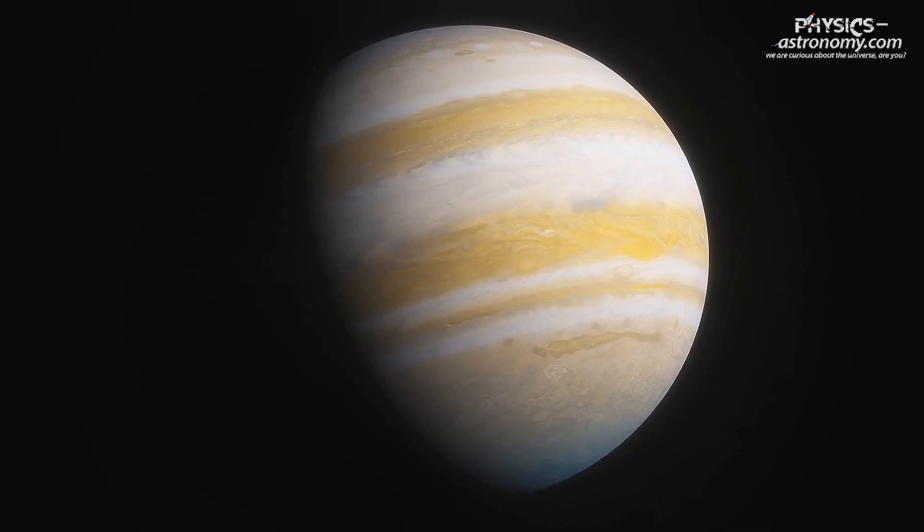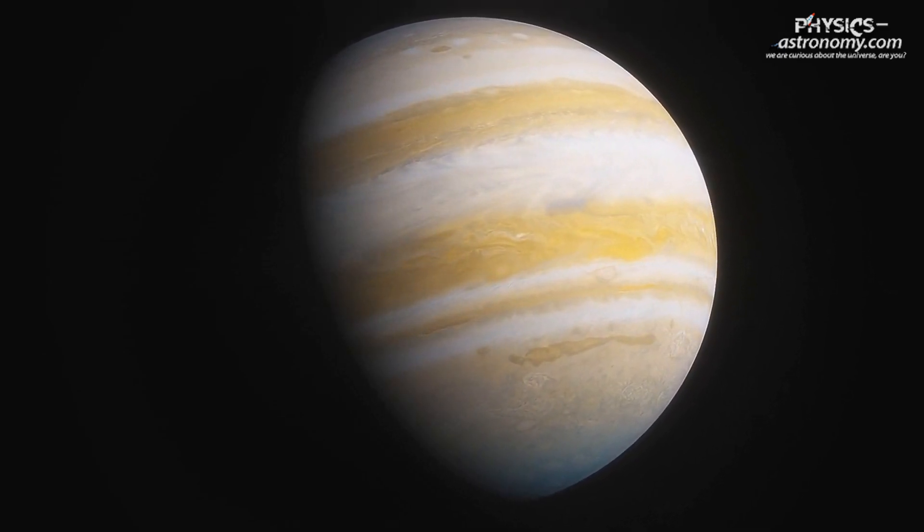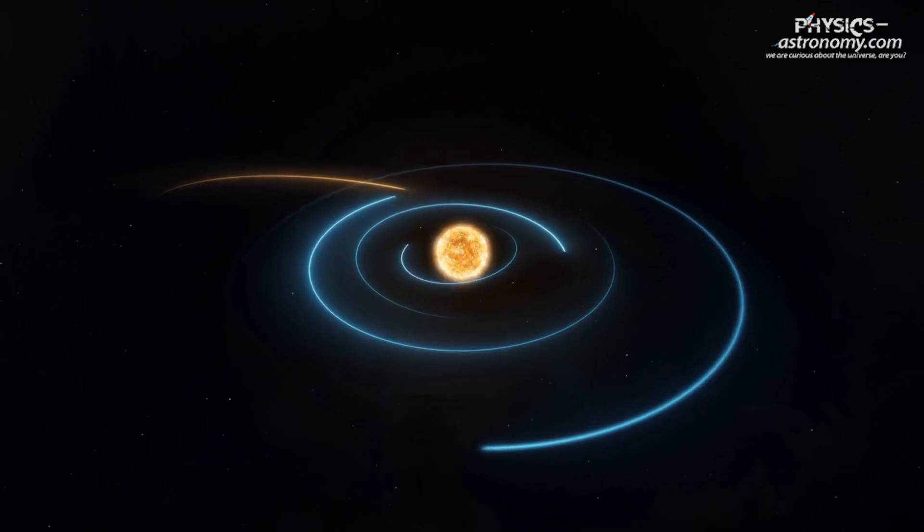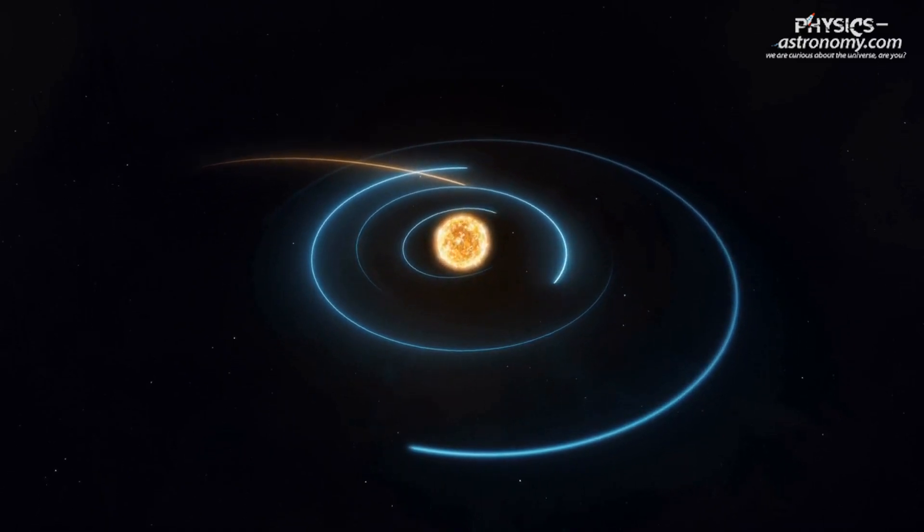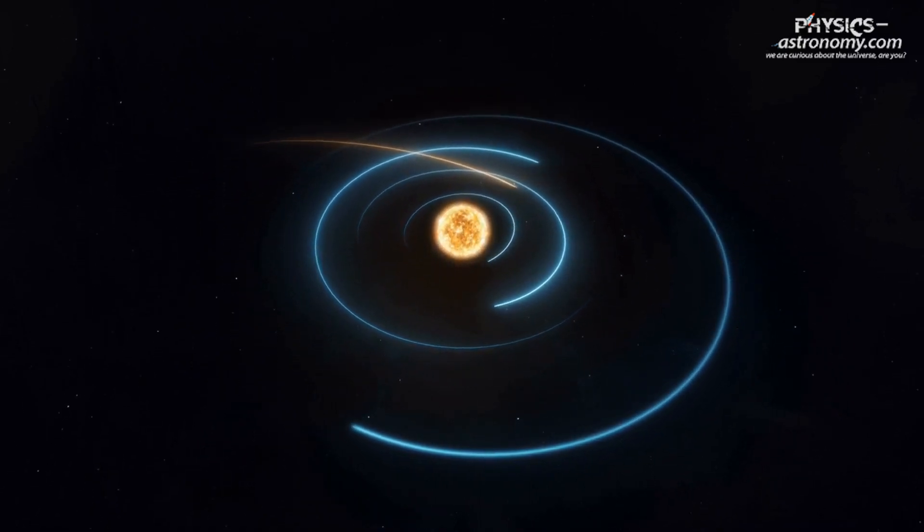The newfound exoplanet is a gas giant, similar in size and mass to Jupiter. It orbits a star comparable to our Sun, with an orbital period of roughly three Earth years.